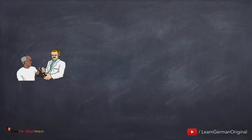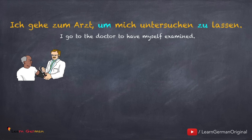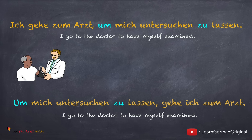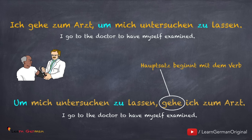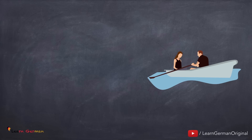Hier ist noch ein Beispiel. Ich gehe zum Arzt, um mich untersuchen zu lassen. Hier auch: Subjekt in beiden Sätzen ist gleich — Ich. Diesen Satz kann man auch mit dem Nebensatz beginnen: Um mich untersuchen zu lassen, gehe ich zum Arzt. Nicht vergessen: in diesem Fall beginnt der Hauptsatz mit dem Verb.